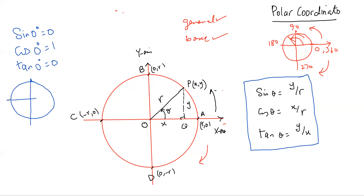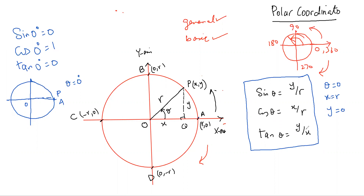When OP overlaps OA, the angle theta is 0. At that point, x equals r and y equals 0. Putting these values into our three equations: sin 0 = 0/r = 0, cos 0 = r/r = 1, and tan 0 = 0/r = 0. This is exactly why you get these values from your calculator.